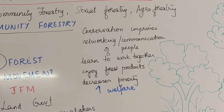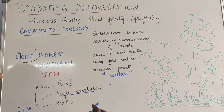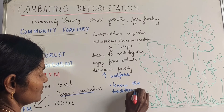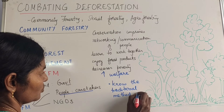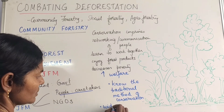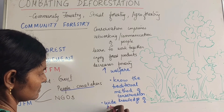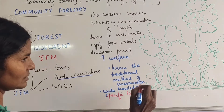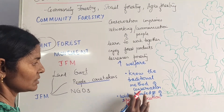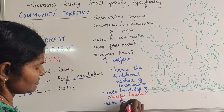How can local communities be so effective? There are three reasons. First, they know the traditional methods of conservation which others may not know. Second, they have wide knowledge of specific locations — for example, knowing which area is rich in certain trees, the rainfall levels, and the climate. Third, they have wide knowledge of different varieties of trees.